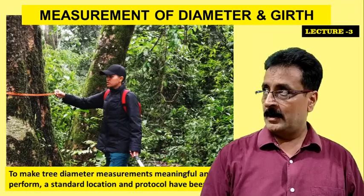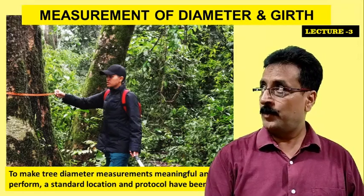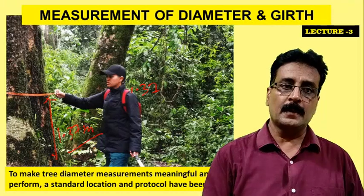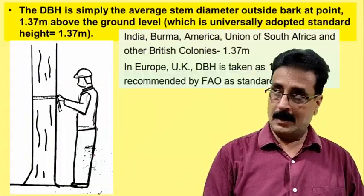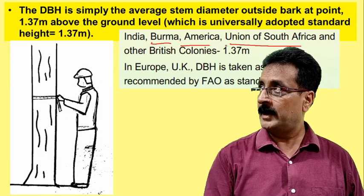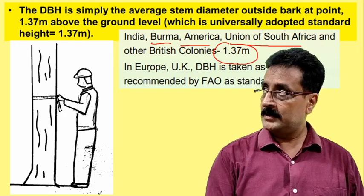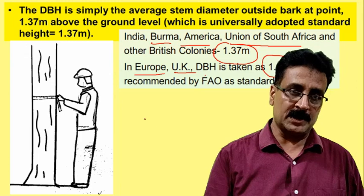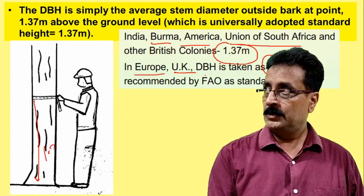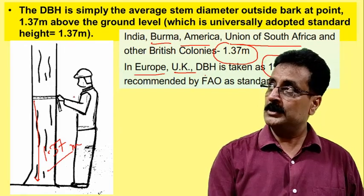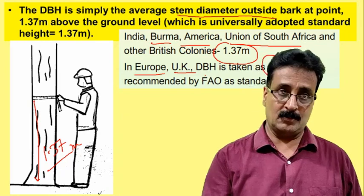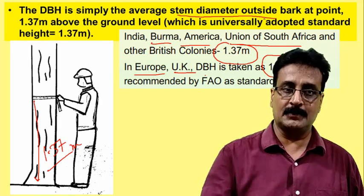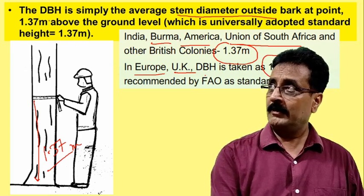We have to make diameter measurement meaningful and at a standard location. That standard location is 1.37 meters from the ground. In India, Burma, America, and British colonies like the Union of South Africa, we measure at 1.37 meters. In some countries like Europe and the UK, DBH is at 1.3 meters — a minor difference. DBH is simply the average stem diameter outside the bark, because bark will not give you timber and must be excluded.